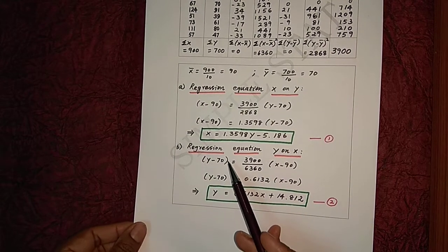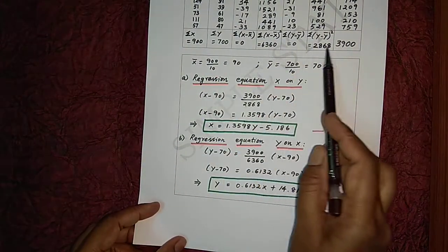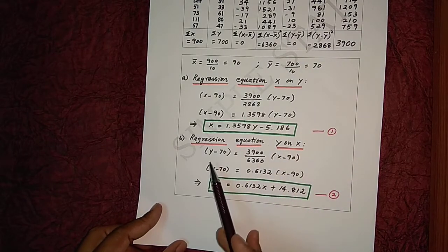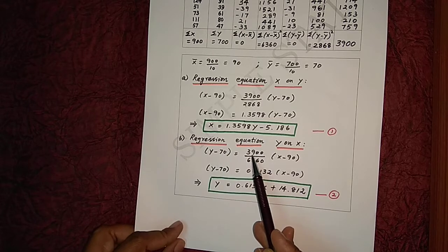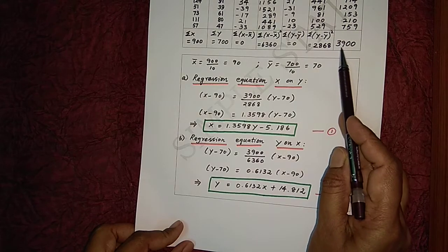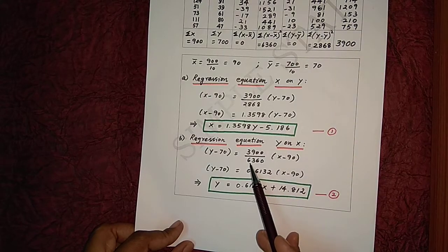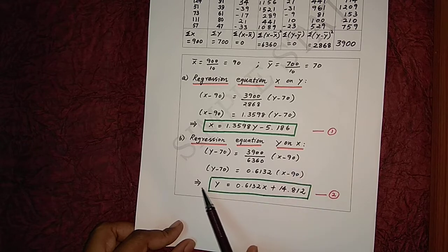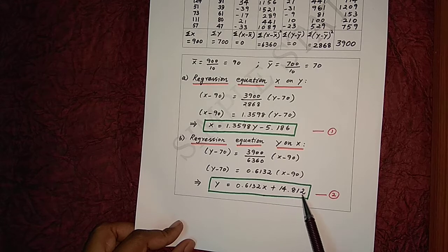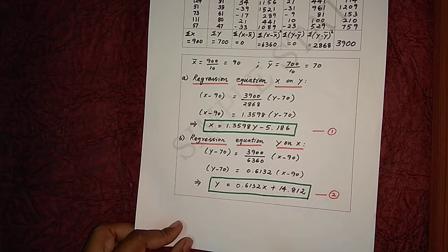Similarly, substituting all values into the regression equation y on x formula, we get: y − 70 = (3900 / 6300) × (x − x̄). On simplifying, we get y = 0.6132x + 14.812 as the regression equation y on x. Note this as equation number 2.